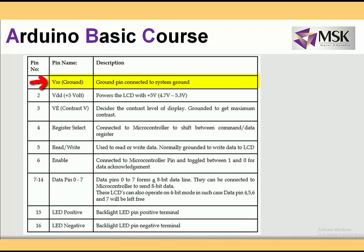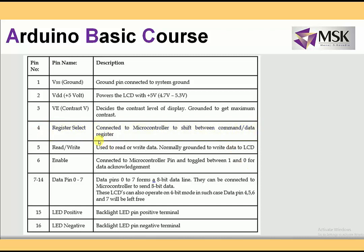VSS is the ground pin. VDD is connected to plus 5 volts. VEE is connected to a potentiometer which controls the contrast of the LCD. Register select (RS) selects either the command register or the data register. The read/write (RW) signal is normally used to read or write the LCD — while writing data I ground this signal since my LCD is almost always in write mode. The enable (E) signal is toggled between 1 and 0 to enable the LCD.